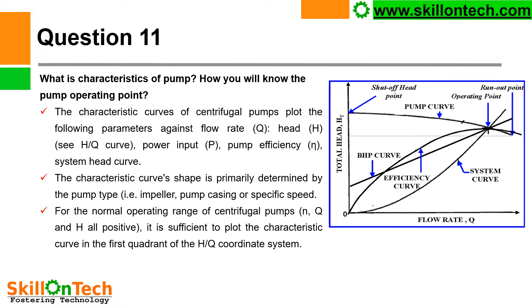Question 11: What are the characteristics of a pump? How will you know the pump operating point? You can see a picture of the HQ curve. The characteristics curve of a centrifugal pump plots the following parameters against flow rate Q: head H is plotted on the Y axis and flow is plotted on the X axis.